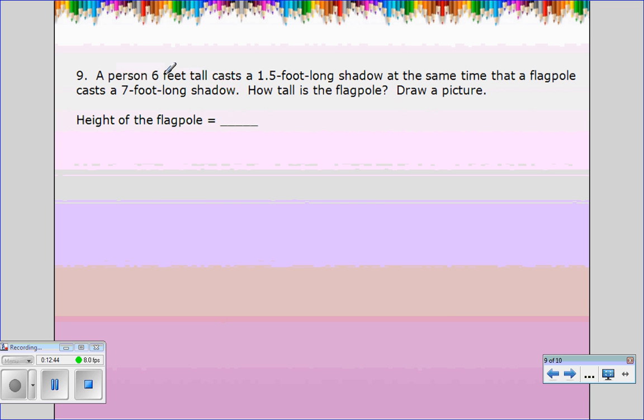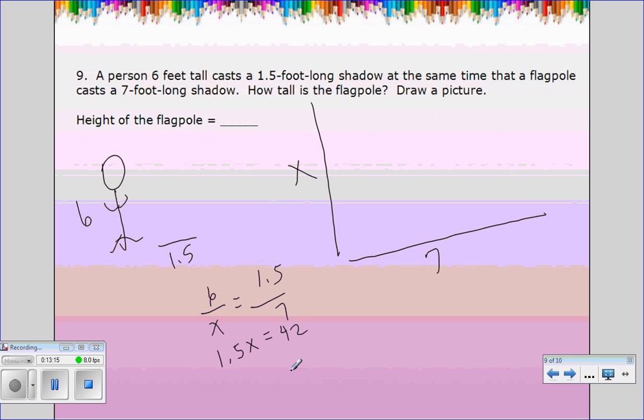All right, last one. A person six feet tall, so here's a person and they're six feet tall. They cast a one and a half foot shadow, so it's not very tall, so the sun is really shiny. At the same time, a flagpole casts a seven-foot shadow. I'll tell us the flagpole. So the height of the guy, the height of the flagpole, the shadow with the shadow. So 1.5X equals 42, so divide both sides by 42. I'm sorry, divide both sides by, divide 42 by 1.5, and we get that X is 28. So the flagpole is 28 feet.